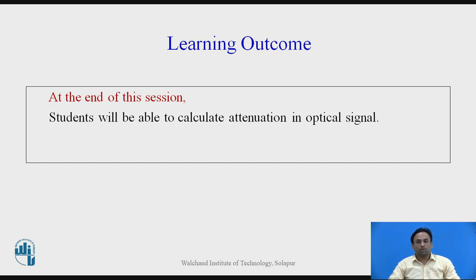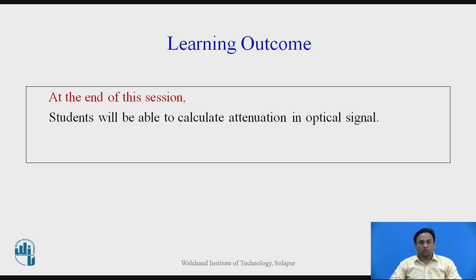We are going to see now the Rayleigh scattering at various wavelengths: 0.63 micrometer, 1 micrometer, and 1.3 micrometers. We will recall how to calculate the Rayleigh scattering coefficient gamma R using the formula from the previous lecture, and then we will switch over to solving the problem.